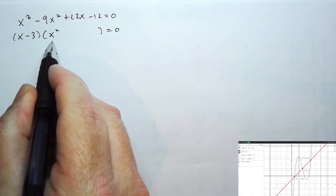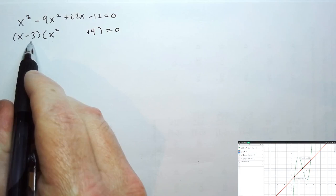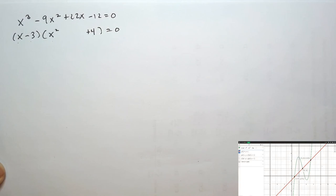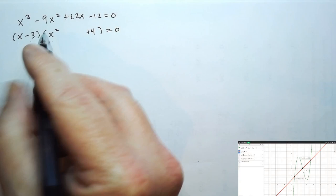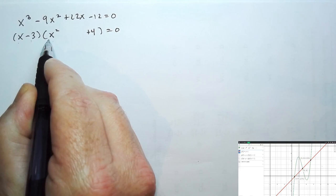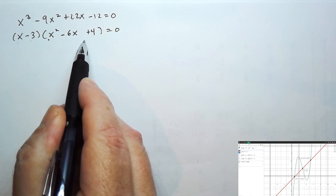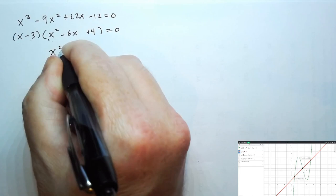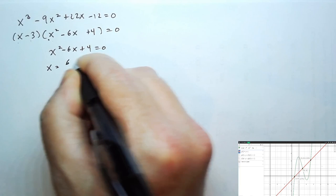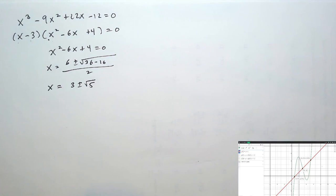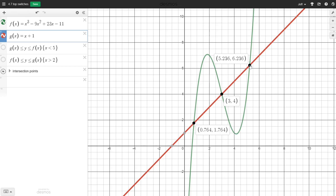We need an x squared term so that x times x squared gives x cubed, and a plus 4 so that negative 3 times 4 gives negative 12. For the middle term: we need negative 9x squared and we have negative 3x squared, so we need negative 6 more, meaning negative 6x. We can double check this works. Then we factor x squared minus 6x plus 4 using the quadratic formula, simplifying to get 3 plus or minus the square root of 5. So the three intersection points are at x equals 3 minus root 5, x equals 3, and x equals 3 plus root 5.